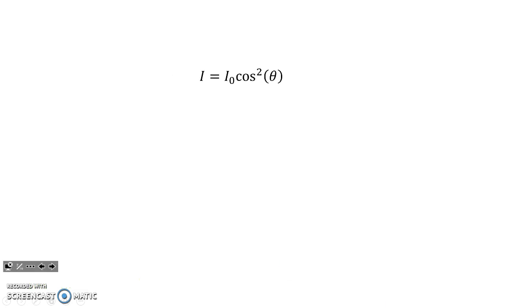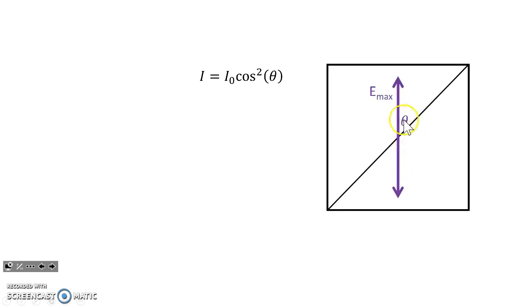Malus' law states exactly that. The new intensity equals the original or the old intensity times the cosine squared of the angle. And again, the angle is the angle between the transmission axis of the filter, the black line, and the polarization plane of the incident light.